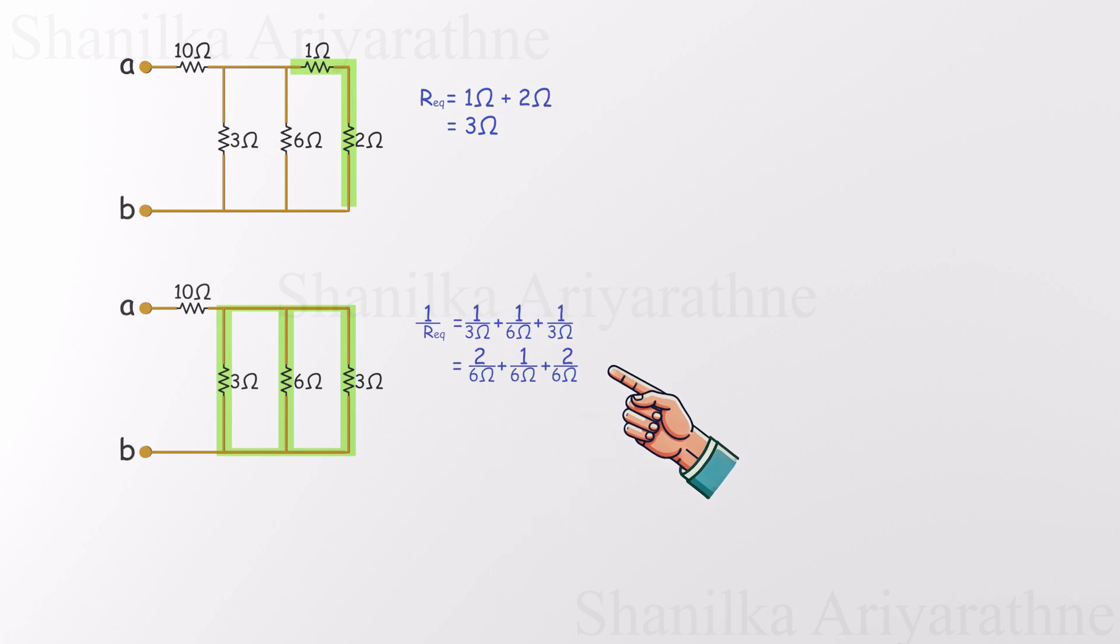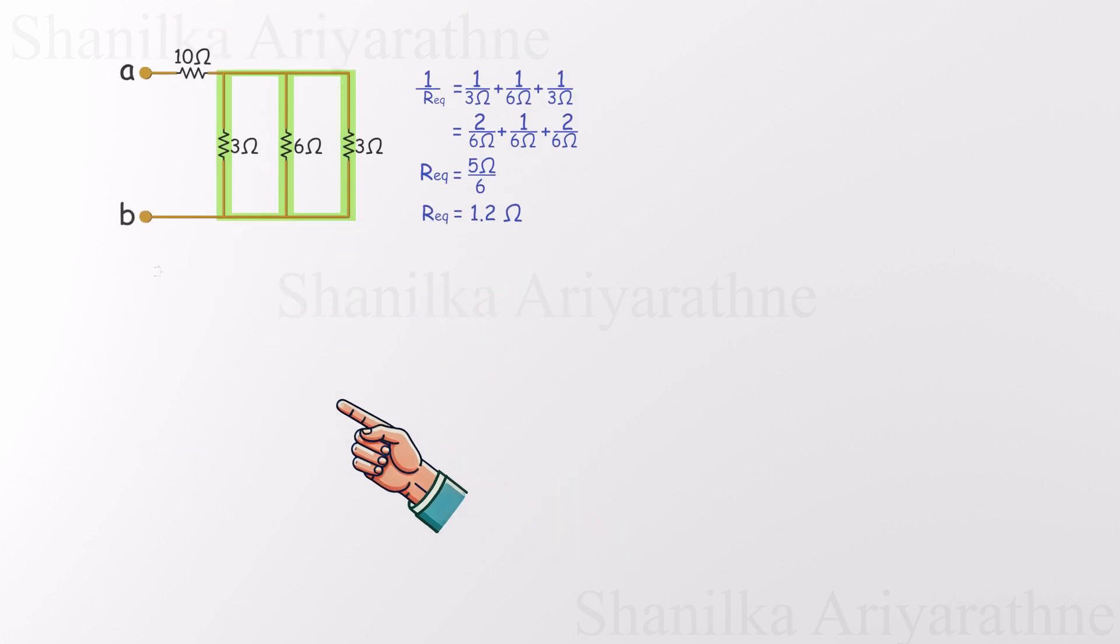With six as a common multiple, the calculation flows smoothly. Combine all three, and we get a tidy equivalent resistance of 1.2 ohms. Just like that, what looked like a bit of a jumble becomes a single clean resistor. Let's redraw the circuit once more and enjoy how dramatically simpler it's become.